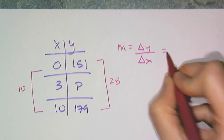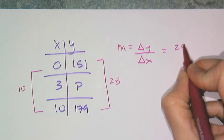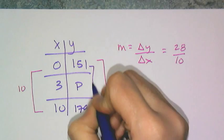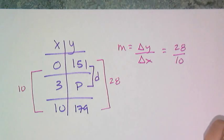So this is 28 and that is 10. So this line, or the line that I'm going to use to approximate, has a slope that's 28 over 10. And so then I look at the distance between those two and call that d, some unknown.